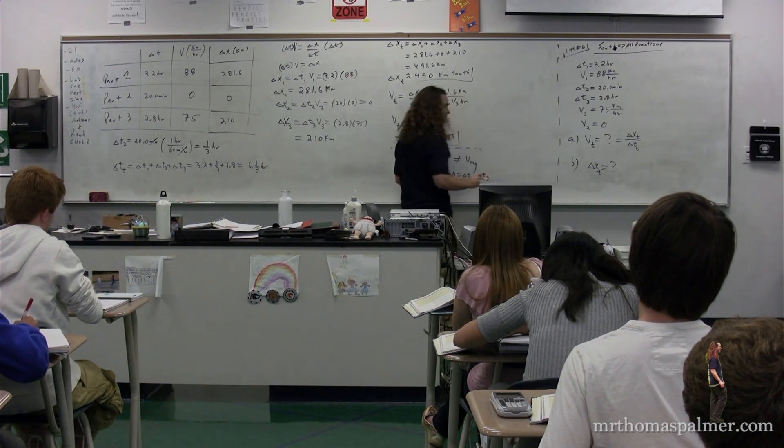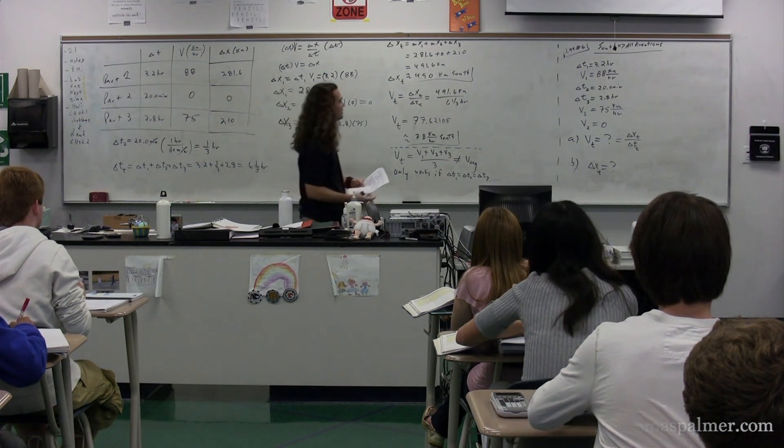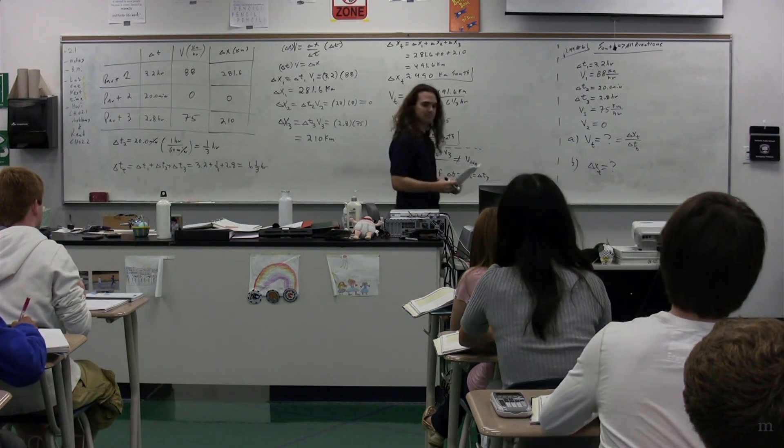Invariably the question comes up: why can't we just do velocity total equals the sum of velocities for all parts divided by three? The only time that works is if all of the velocities were experienced for the same amount of time — so this only works if delta T1 equals delta T2 equals delta T3. Otherwise, which is the majority of the time, you have to go through and figure out your displacement total and your time total.